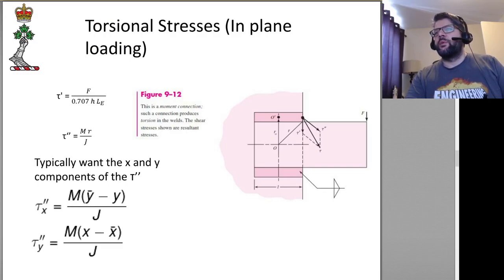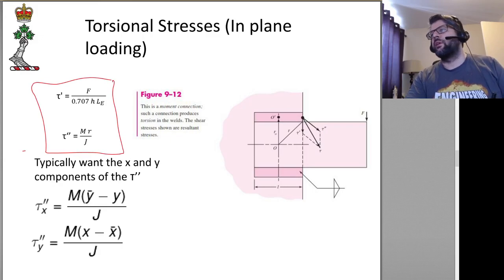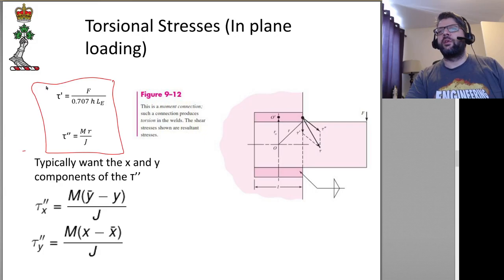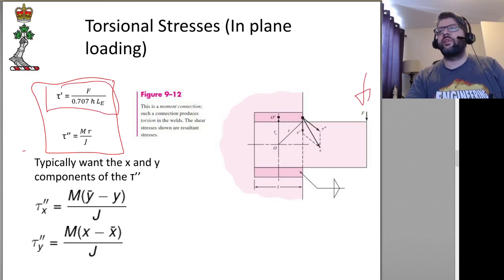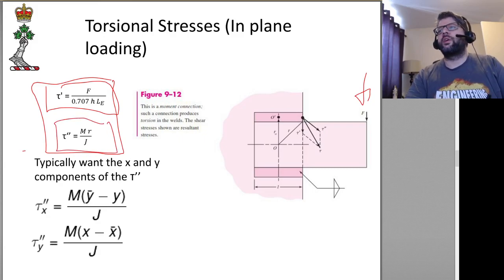Essentially we want to be able to combine these stresses, but they're acting in different vectors. The direct component — tau-prime — obviously acts directly in the direction of the force applied. Tau double-prime, however, is acting in a vector that is perpendicular from the vector between the centroid of the weld group to the point we're looking at.